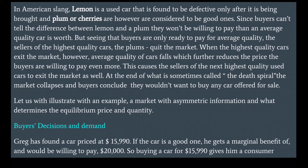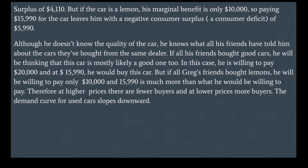To illustrate, consider a market with asymmetric information. Greg has found a car priced at $15,990. If the car is a good one, he gets a marginal benefit and would be willing to pay $20,000, giving him a consumer surplus of $4,110. But if the car is a lemon, his marginal benefit is only $10,000, so paying $15,990 leaves him with a negative consumer surplus — a consumer deficit of $5,990.